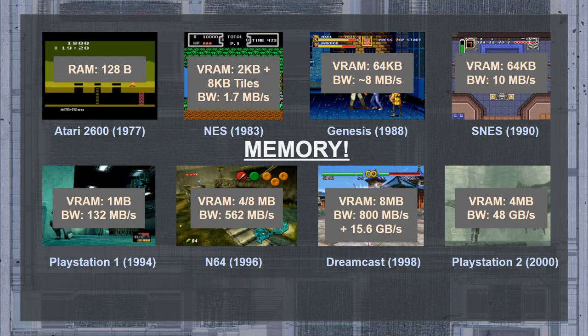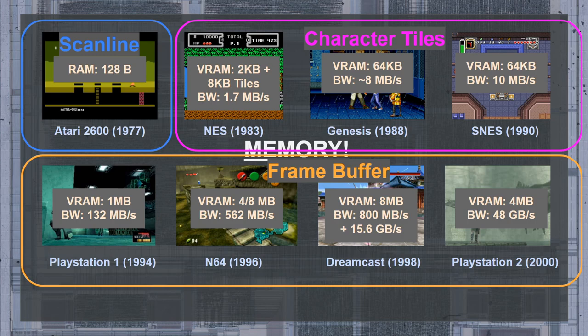Additionally, this jump in video memory capacity allowed for the transition from character tile-based scanline rendering into rendering based on a full frame buffer. By moving to a frame buffer, pixels can be computed in any order, allowing for better load balancing and more visually complex scenes. Effectively, the frame buffer acts as a way to buffer the rendering, removing the need to constantly erase the display beam. So that explains why capacity is important — the video memory needs to be big enough to store a frame buffer or two.